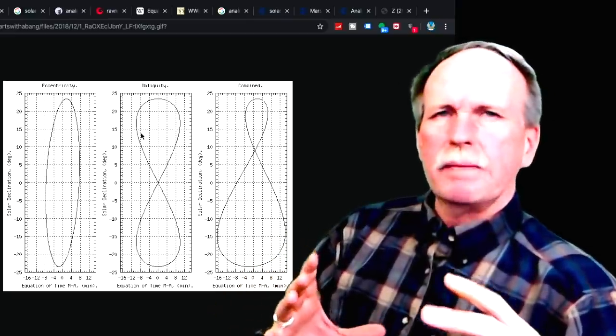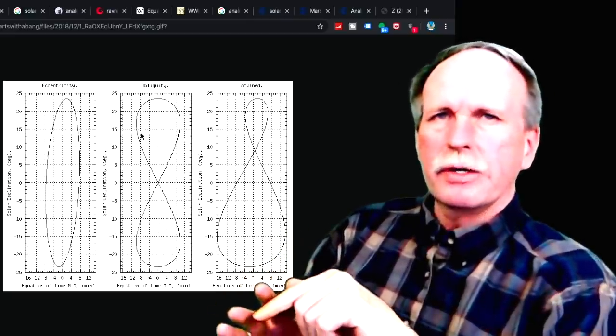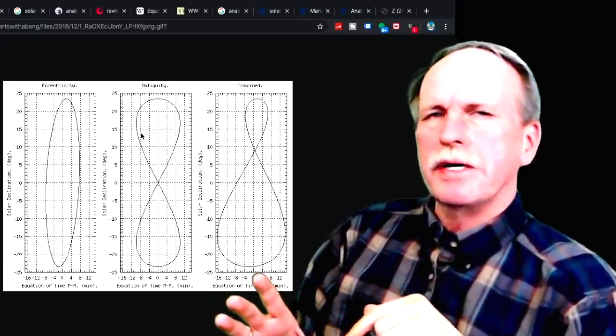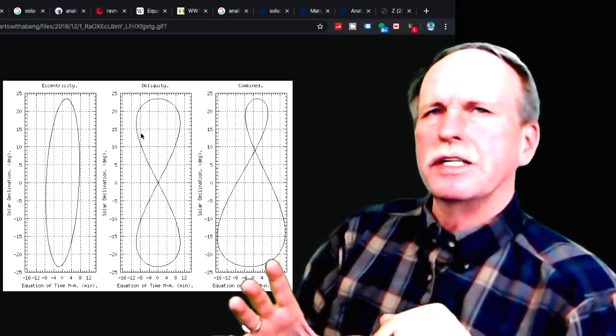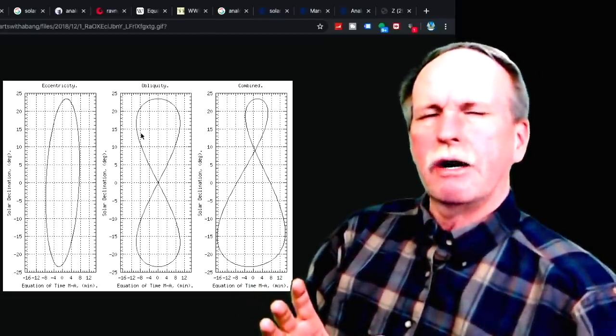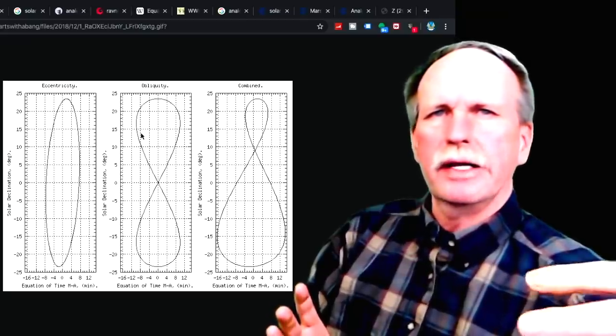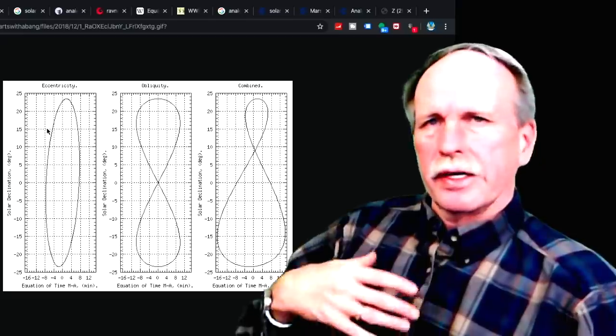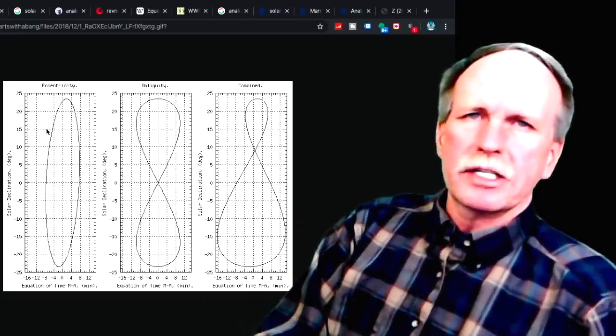According to Kepler's laws of planetary motion, when you have an elliptical orbit like that, as you come to perigee, closest to the sun, our orbital speed increases. That's in December. And then as we get out to the farthest point from the sun, our orbital speed is a little slower, and that's in June.